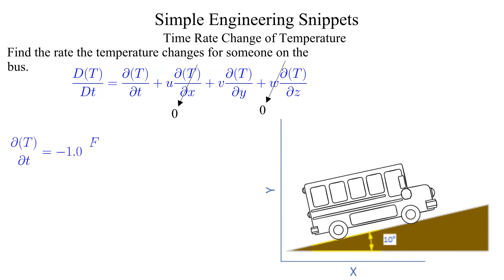From the problem statement, the partial derivative of temperature with respect to time is minus one degree per hour. The partial derivative of temperature in the y direction is minus 10 degrees per mile. We do not need the x component velocity since there is no temperature gradient in the x direction, but we do need to determine the y component velocity. From geometry and the provided speed of the bus, the y component velocity is 5.2 miles per hour.